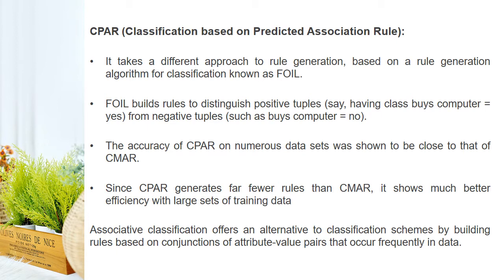Associative classification offers an alternative to other classification schemes by building rules based on conjunctions of attribute-value pairs that occur frequently in data. In summary, association rule mining concepts can be incorporated and used for classification purposes.